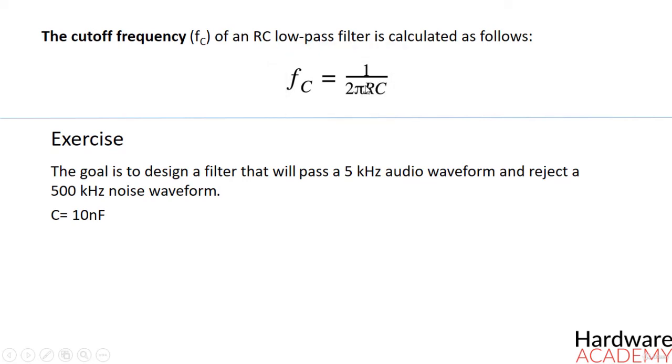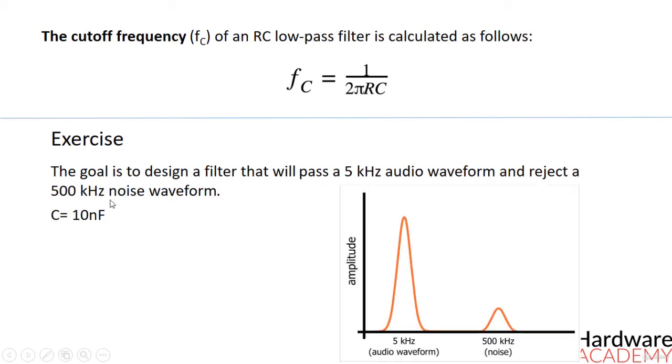The goal is to design a filter that will preserve a 5 kilohertz audio waveform and reject a 500 kilohertz noise waveform. The cutoff frequency has to be between this 5 kilohertz audio signal and this 500 kilohertz noise waveform, so we will try first with a cutoff frequency of 100 kilohertz.